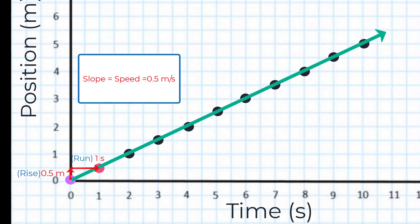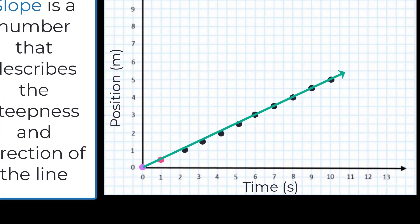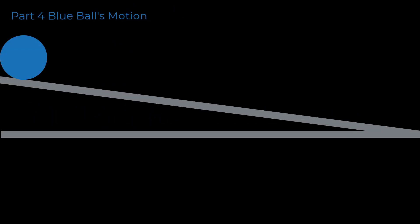By modeling the data and analyzing our model, we have determined the speed of the red ball to be 0.5 meters every second. However, we don't only live in a universe of flat surfaces. We will now evaluate a blue ball as it rolls down an inclined plane, using the methods previously introduced.